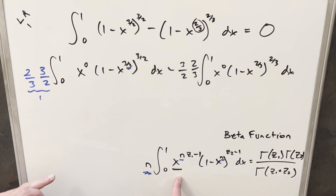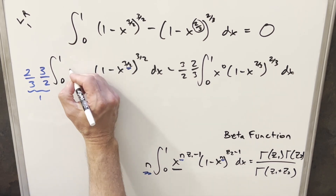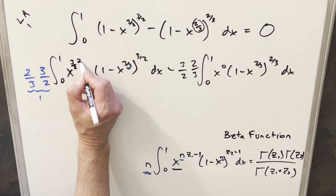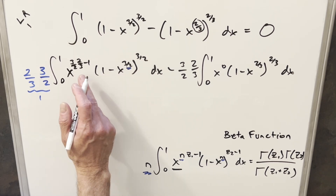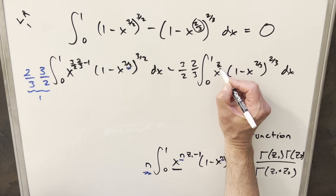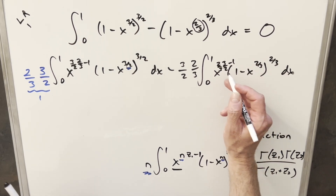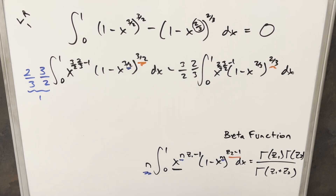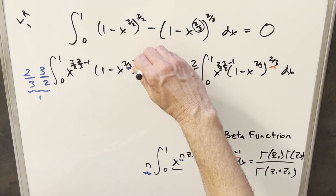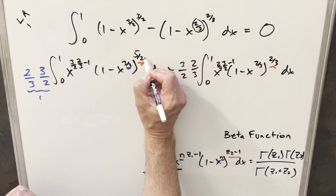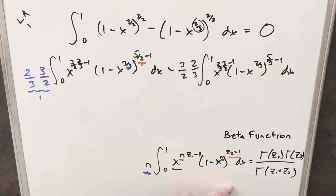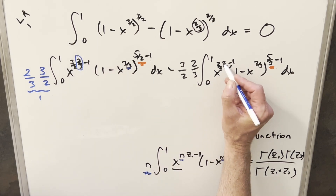Now I want to rewrite x to the zero in the proper format. The x base stays, and I need the n value, so for the first integral we need three-halves. If I multiply three-halves by two-thirds and subtract one, I get one minus one, so the exponent is still zero. Doing the same for the second integral with two-thirds: multiply by three-halves and subtract one — again x to the zero. Next, I want to get the exponents of (1 minus x) into the form z₂ minus one. For three-halves, I can rewrite that as five-halves minus one, and two-thirds as five-thirds minus one. Now we have everything we need to apply the beta function formula, with our z₁ and z₂ values identified.